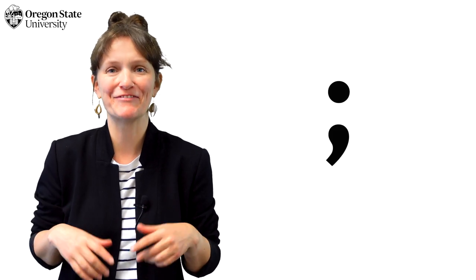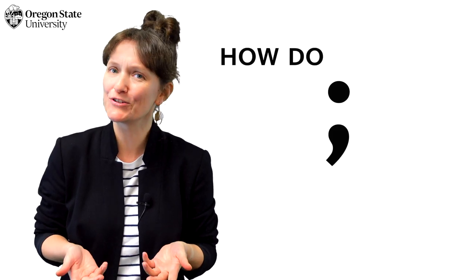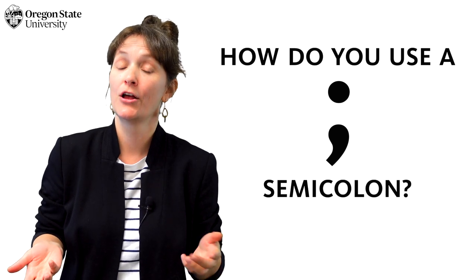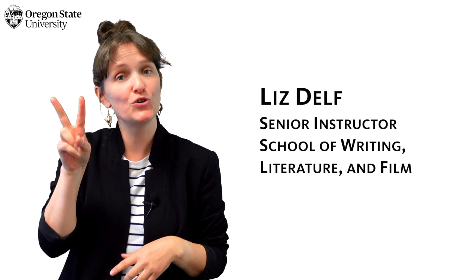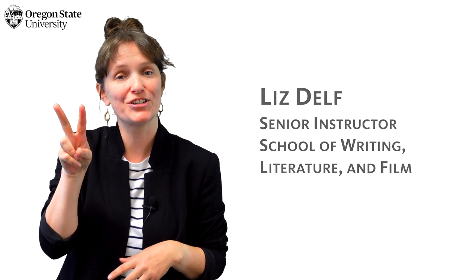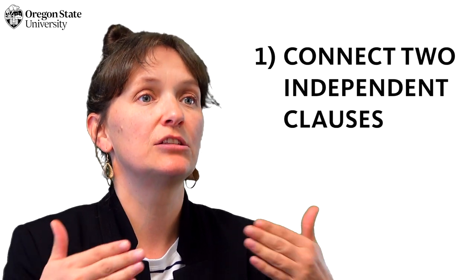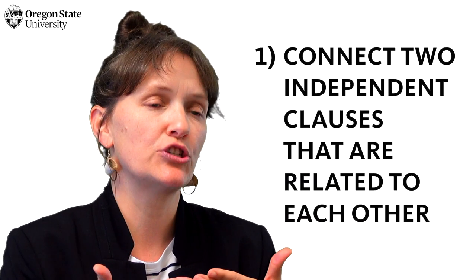You've seen it before — that winking punctuation of a dot and a comma — but how exactly do you use a semicolon? The good news: there are exactly two answers to this question, and that's it. The main way to use a semicolon is to connect two independent clauses that are related to each other.